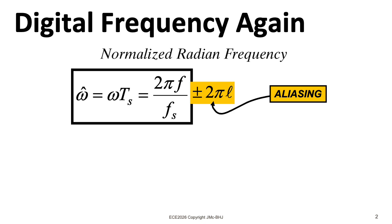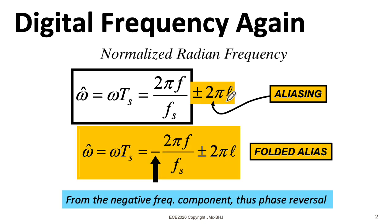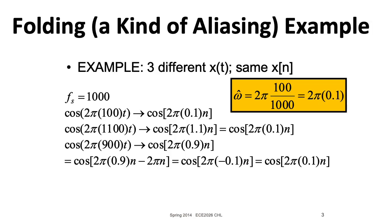In the last lecture, we introduced the idea of a digital frequency, where we took our frequency omega and multiplied it by the sample period, or equivalently divided it by the sample rate. That gave us our omega hat. We saw that in the two-sided spectral domain, there are these aliases in omega hat land, where you could add or subtract multiples of 2 pi. Since we have these negative frequencies, we can think about adding or subtracting multiples of 2 pi from the negative frequency component. We'll see that this gives us a flip of the phase of the resulting sinusoid.